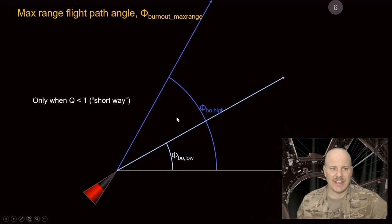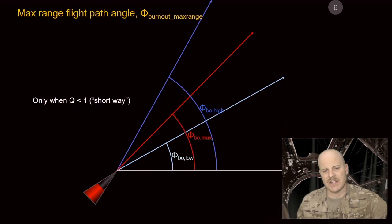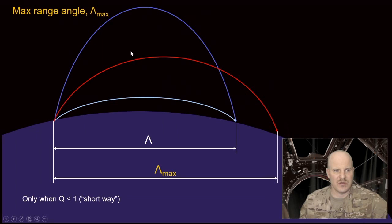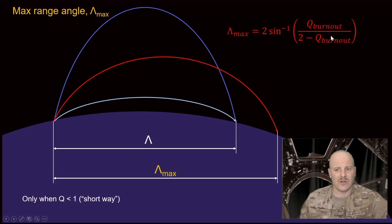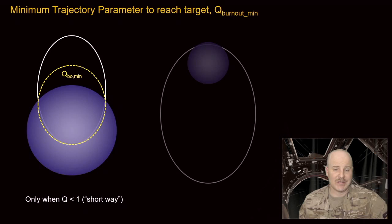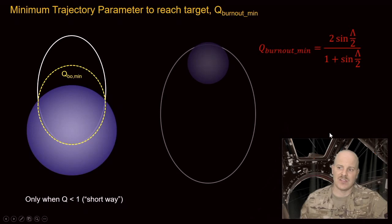We can also find the max range flight path angle — useful for determining the farthest target hittable from a given launch site. The max range equation is related to the range angle. We can also calculate the maximum range angle itself given Q burnout, which tells us the furthest range we can achieve. Finally, the minimum trajectory parameter Q min tells us the smallest rocket that can reach a particular target, and it too is related to range angle.